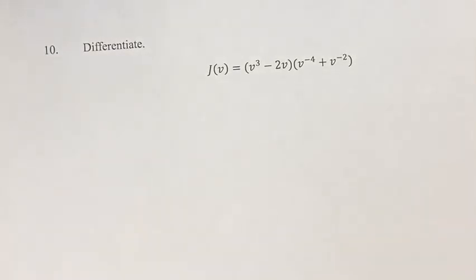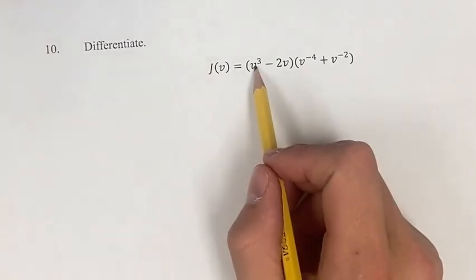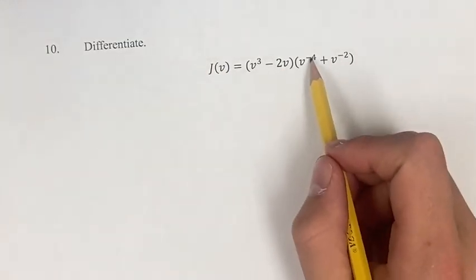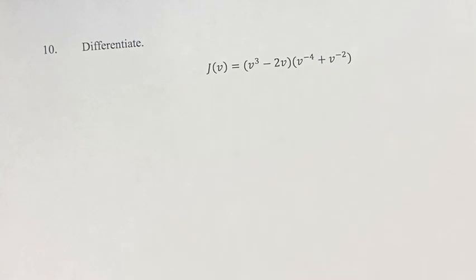Hello, and welcome back to another video. In this problem, we're looking to differentiate the function j of v is equal to v cubed minus 2v times v to the negative 4th plus v to the negative 2.